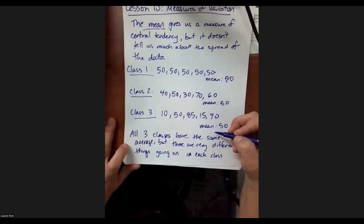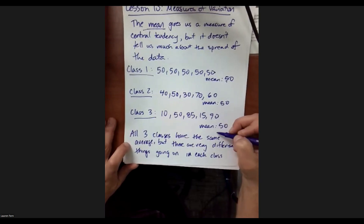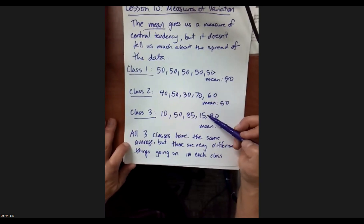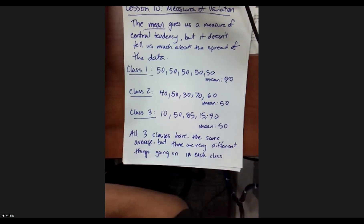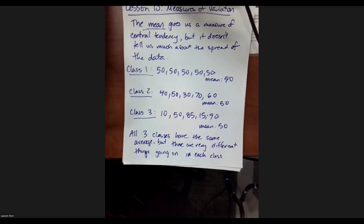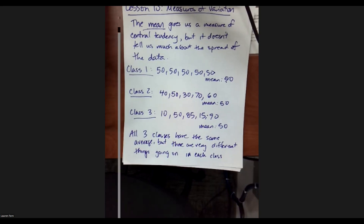We're going to use a measure of variation that goes along with that. My point on Friday was all three of these classes have the exact same class average, but there are different things going on in each class. So how can we ask ourselves how indicative is the mean?